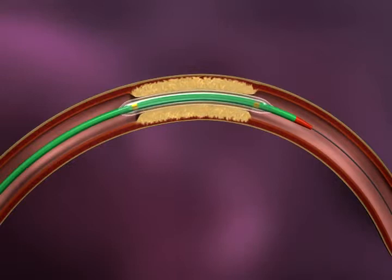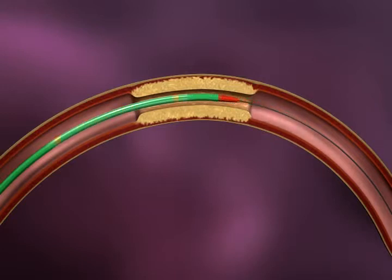Once the lesion has been dilated, deflate the Gateway PTA balloon catheter and remove the balloon catheter while maintaining guide wire position across the lesion.